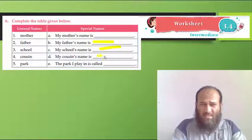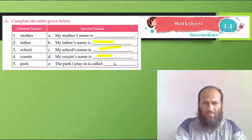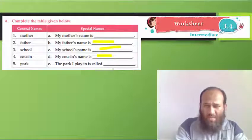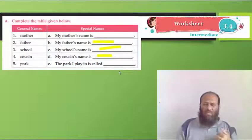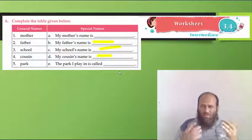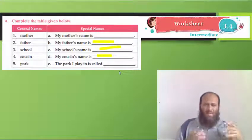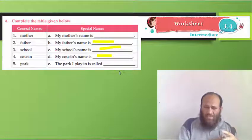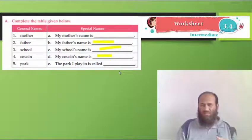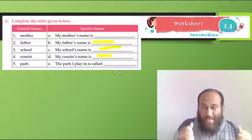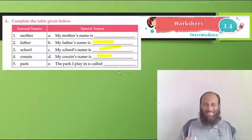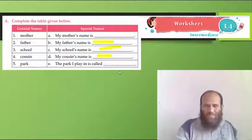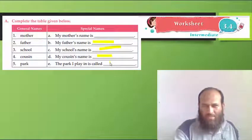School is a general name. There are many schools. But your school is special, and your school's name is Roots and Wings Academy. Write the name here. Do you have a cousin? Write your cousin's name. The park I play in is called - so, different parks have different names. I want you to write special name for your park.